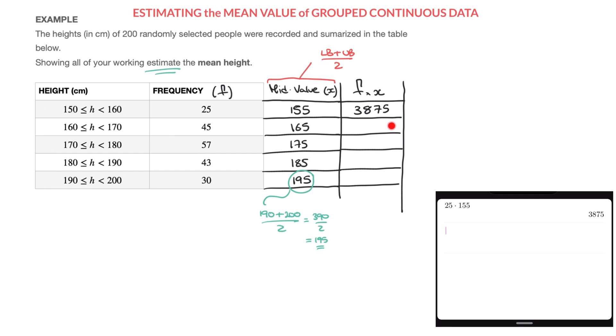I move down to the next row, and I need to complete this cell, so that's going to be 45 times 165. And so again on my calculator, I do 45 times 165, and that's equal to 7425. And so I write that, that's 7425.